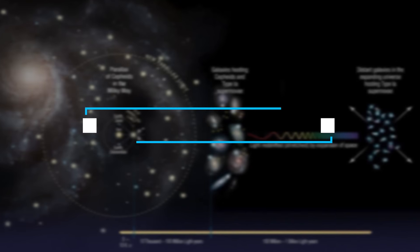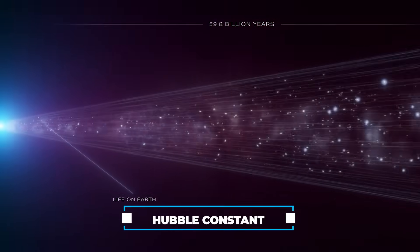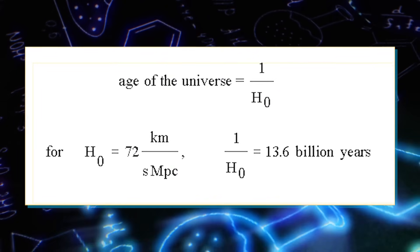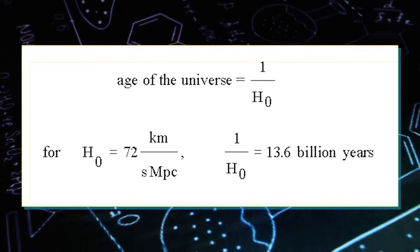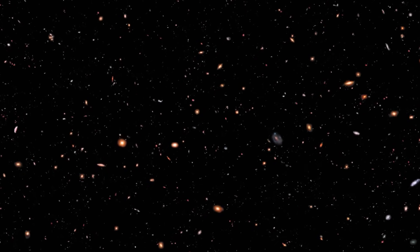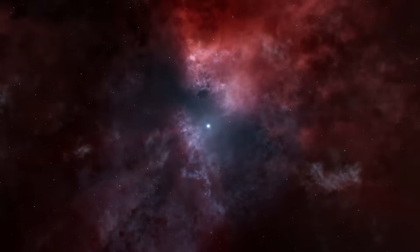To determine the age of the universe, we must calculate the Hubble constant, a unit of measurement describing the universe's expansion in kilometers per second per megaparsec. Despite its initial complexity, this concept becomes simpler to grasp. Essentially, if we can measure both the distance to a star and its velocity, we can deduce the time it took to reach its current location.